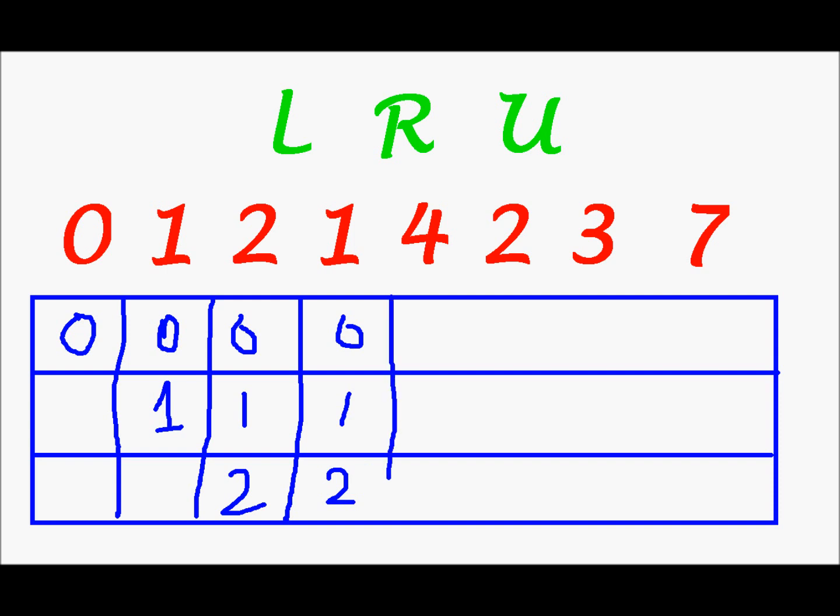The next page we need is 4. And to get in 4 we'll have to remove either one of these: 0, 1 or 2. Now 1 cannot leave because 1 was used twice. So either 0 has to leave or 2 has to leave. And out of 0 and 2, 0 was the first to enter, so it will be the first to go out. So now it's 4, 1 and 2.